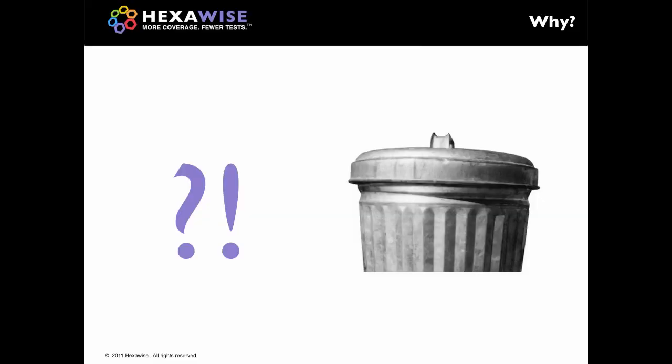Why is this a useful topic? Two reasons, really. The first is that when people first get started in combinatorial and pairwise testing, in my experience, the area they struggle with the most is trying to identify the appropriate test inputs to use. Secondly, unless you do a really thorough and thoughtful job of identifying your test inputs, you're going to head straight into a big garbage-in, garbage-out problem.